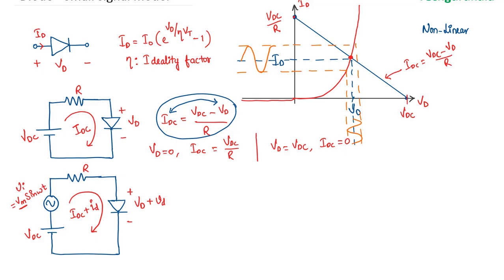If we look at the characteristics around this DC biasing point — let's call this the Q point, or quiescent point, meaning silent or not changing — the DC signal is constant. On top of it the AC signal is applied, so because of the small change in voltage across the diode, there would be a small change in the current. Around this Q point, if you look at this nonlinear characteristic, the slope along the curve around the DC biasing point is going to be constant, which means the nonlinear characteristic around a Q point for a very small AC signal can be taken as linear.